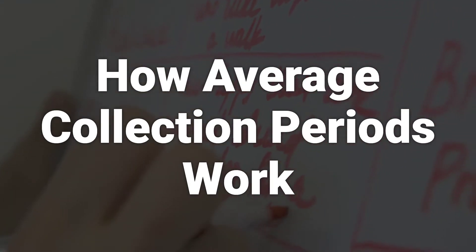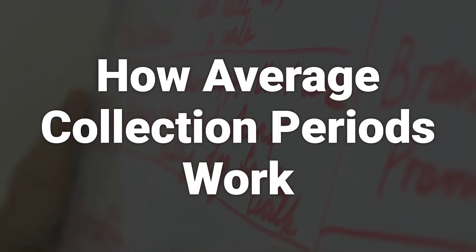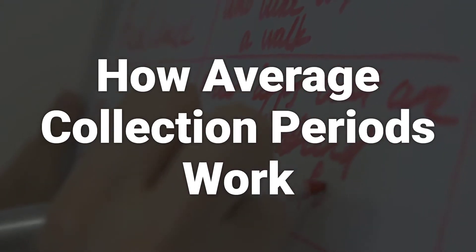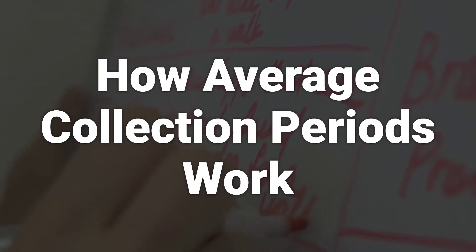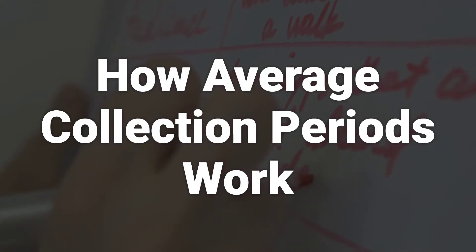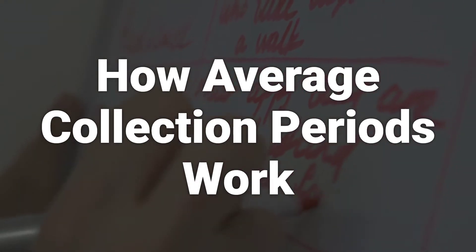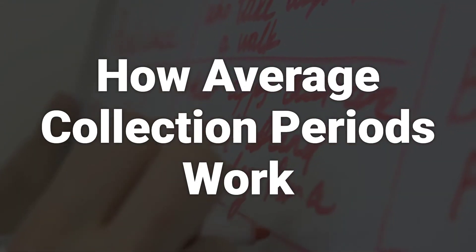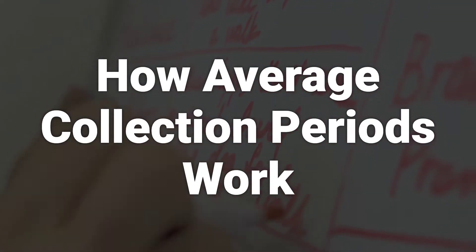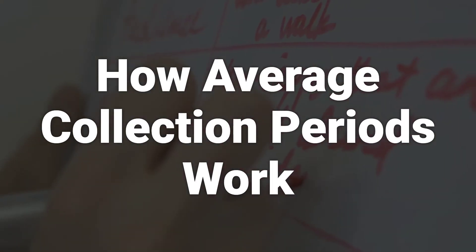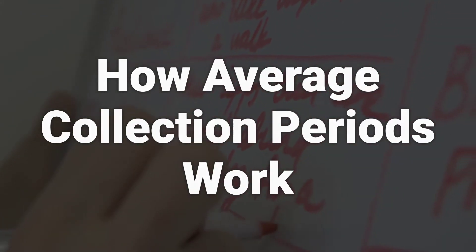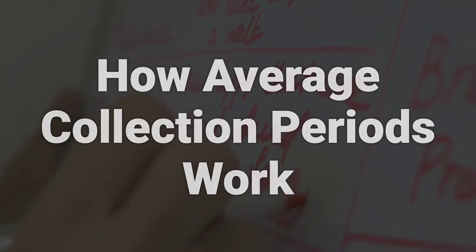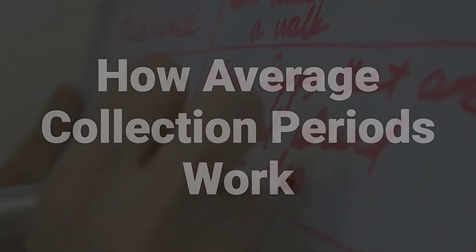Accounts receivable is the money entities owe to a company when they purchase goods and services. The average collection period is the average number of days between a credit sale date and the date when the purchaser remits payment. A lower average collection period is generally more favorable than a higher one. Businesses must be able to manage their average collection period to operate smoothly.